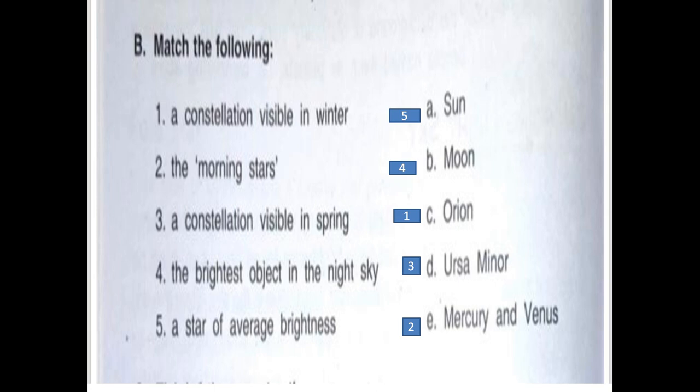First one, a constellation visible in winter. Option is Orion. Second one, the morning star. Morning star is Mercury and Venus.